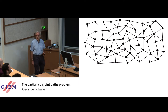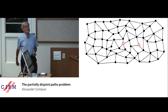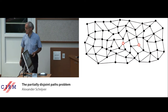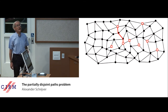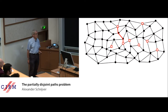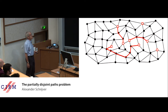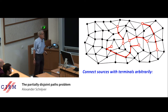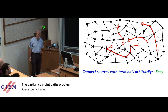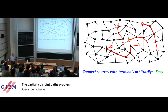Let me give a small recapitulation of disjoint paths in general. Say you have a given graph with certain red circles called sources — four in this case — and also four sinks or terminals. You would like to make paths from the sources to the terminals so that they are vertex-disjoint. Connecting sources with terminals arbitrarily is easy — that is Ford-Fulkerson or Menger — polynomial time.